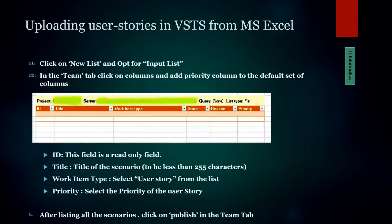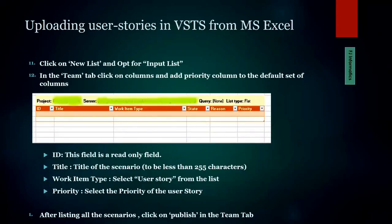After clicking the 'Connect' button in the configuration wizard, a standard template appears in your Excel window. When connecting, you select the option 'Input List,' and by default these fields appear: ID, Title, Work Item Type, State, Reason, and Priority. The ID field is read-only; you cannot enter a value there. Title is your user story name.